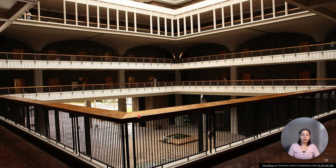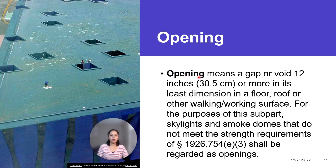This is the large permanent open space in the building. Opening means a gap or void 12 inches — that is 30.5 cm — or more in its least dimension in a floor, roof, or other walking or working surface. For the purpose of this sub-part, skylights and smoke domes that do not meet the strength requirements of 1926.754E3 shall be regarded as openings. Here are some openings in the roof.